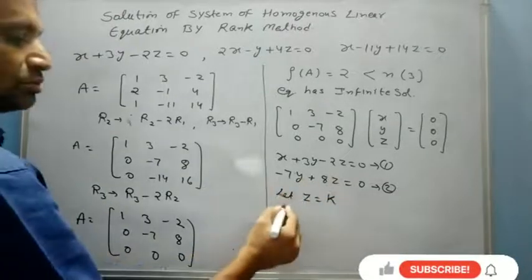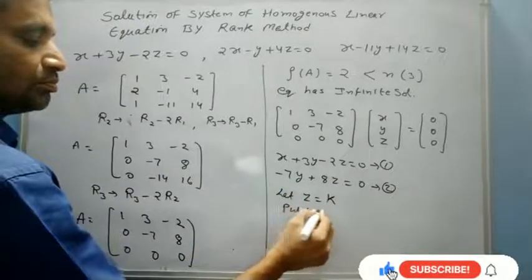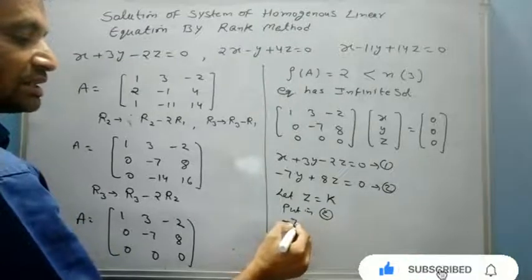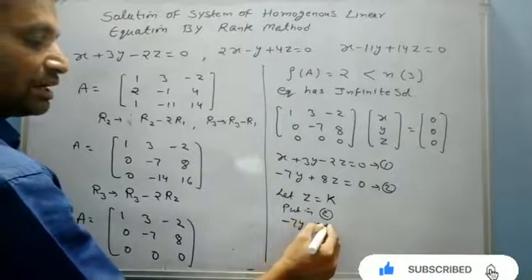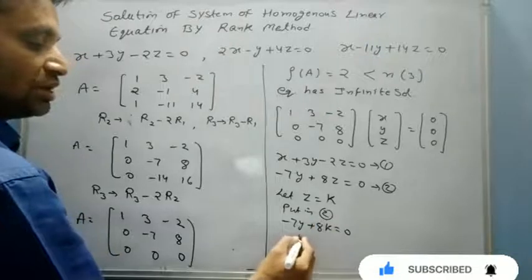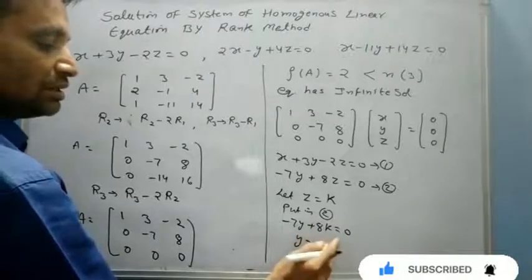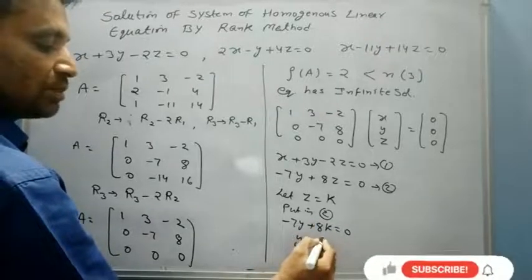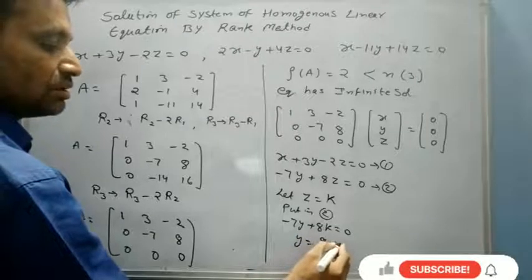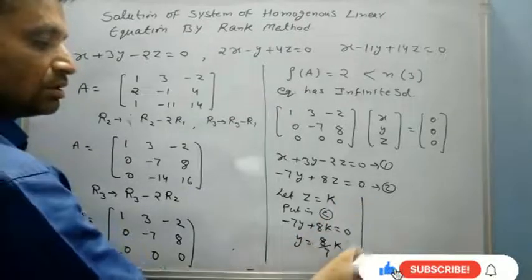Putting in equation 2, I will get minus 7y plus 8K equals 0. Then y equals 8 by 7K.